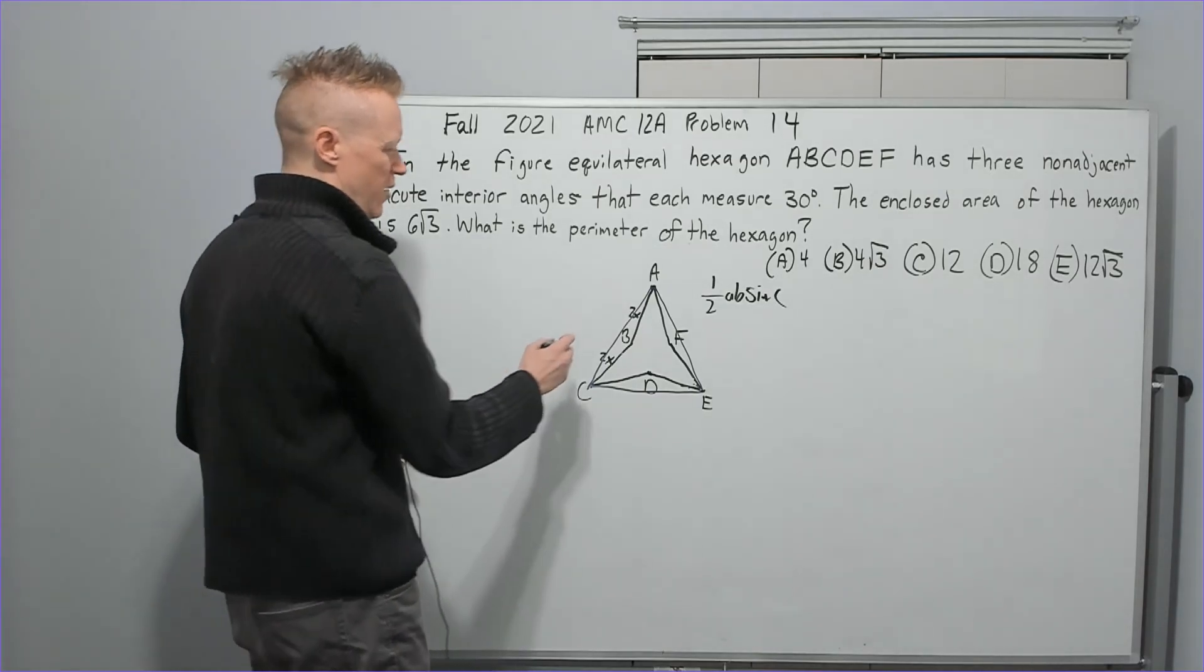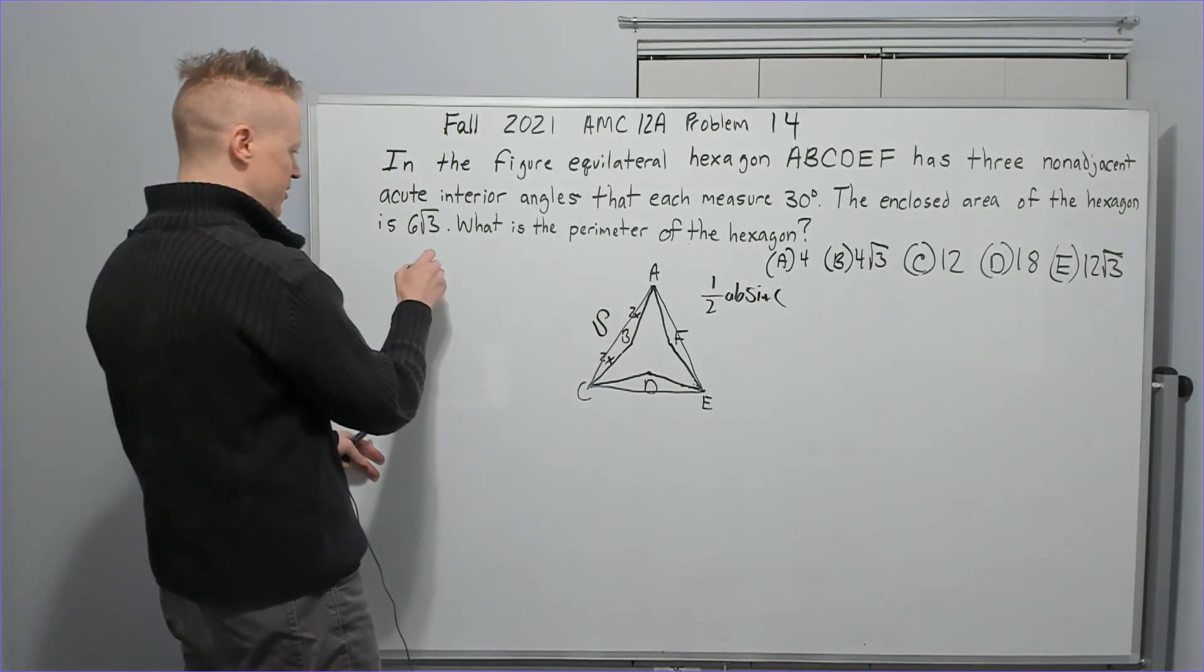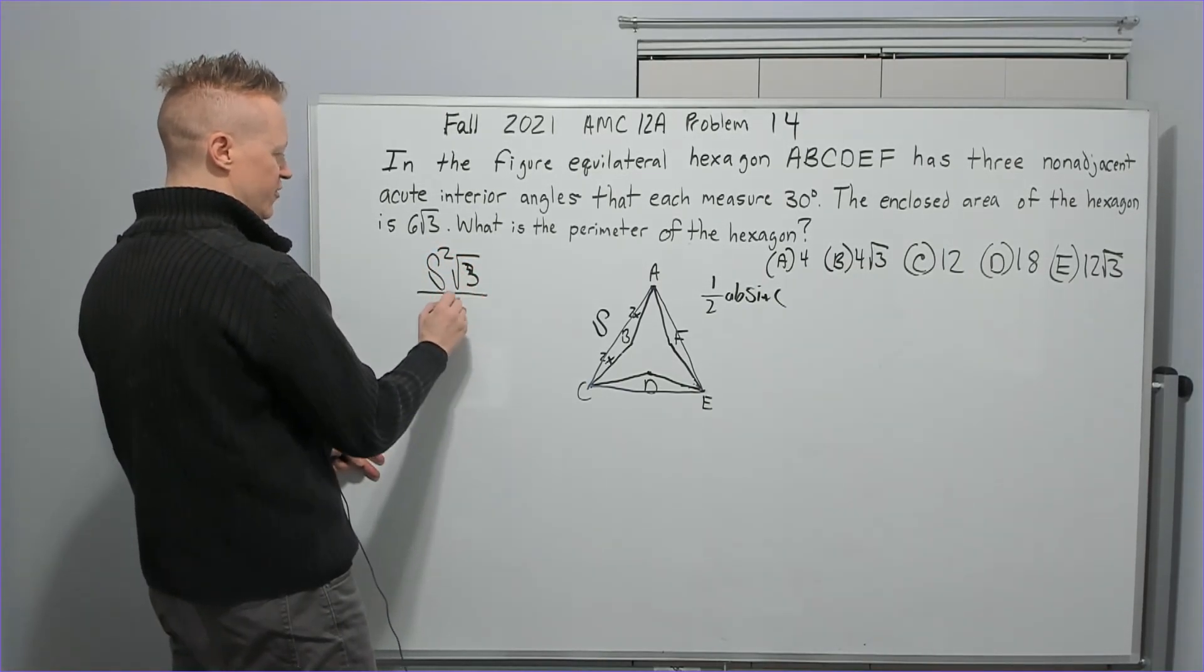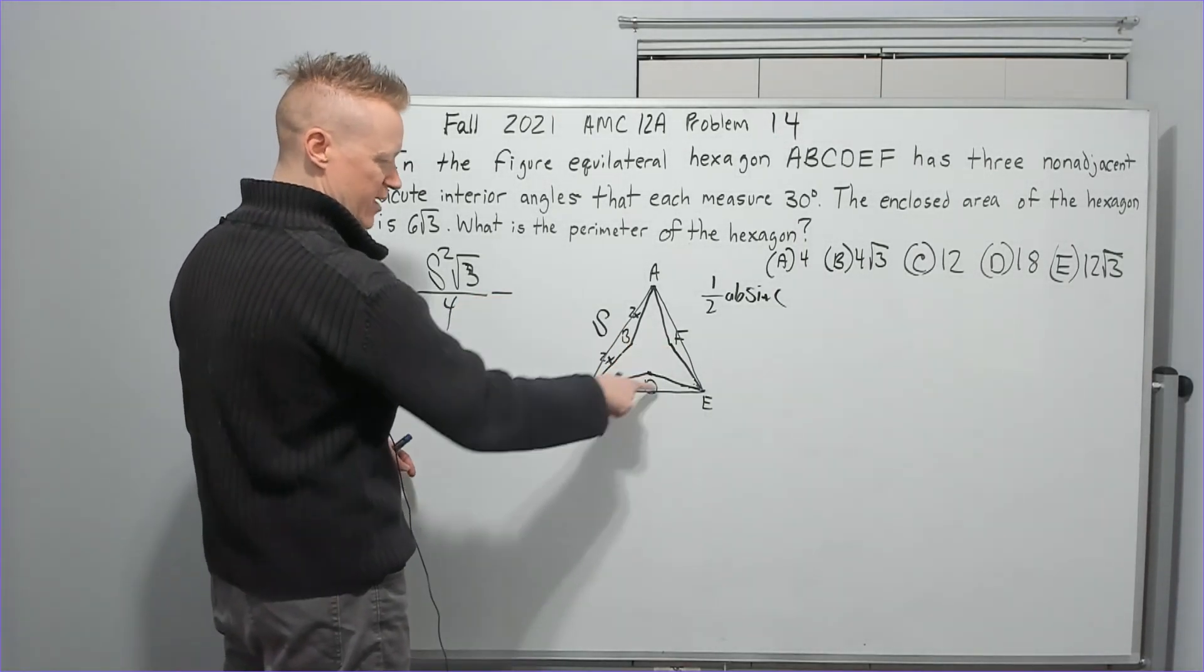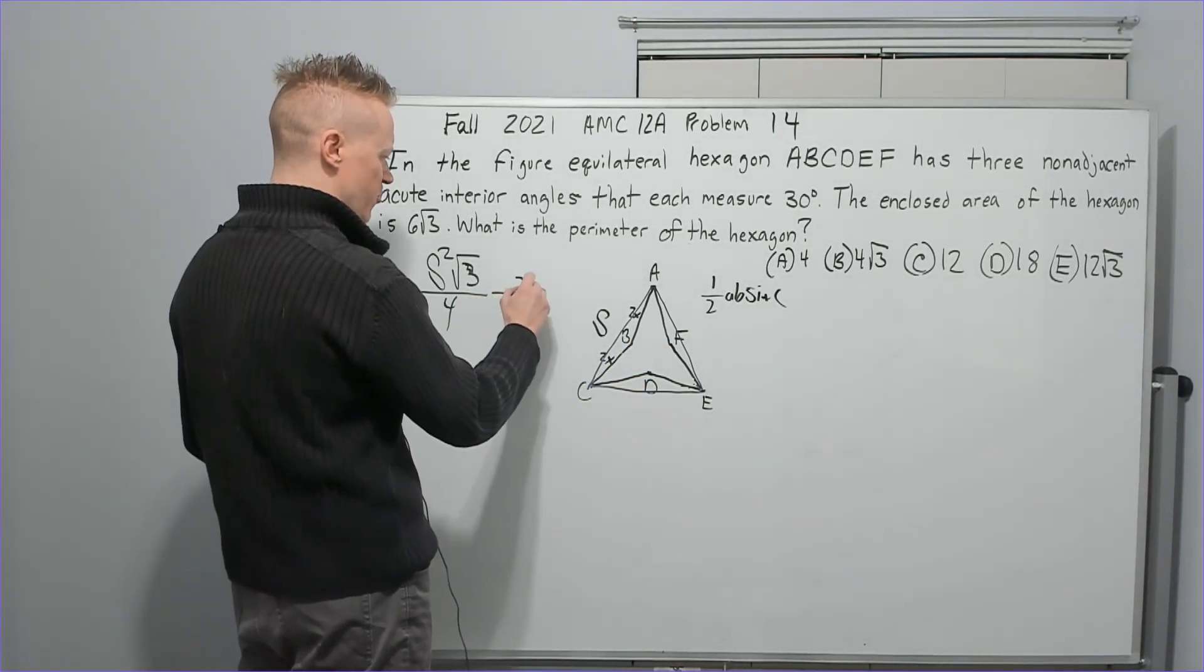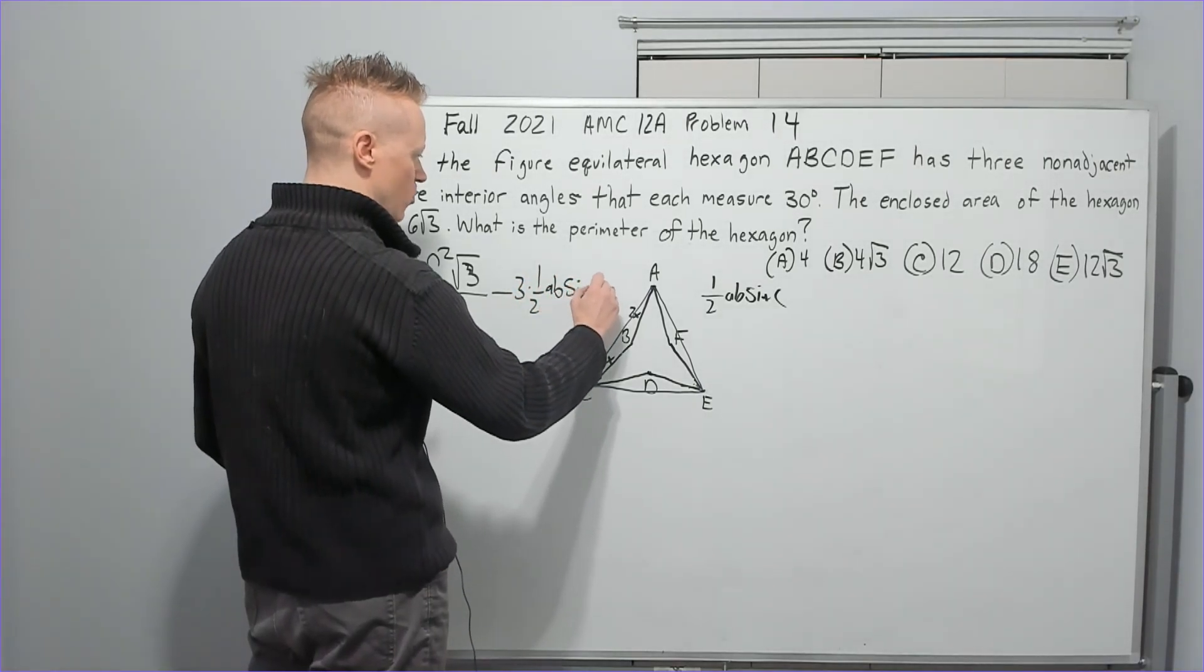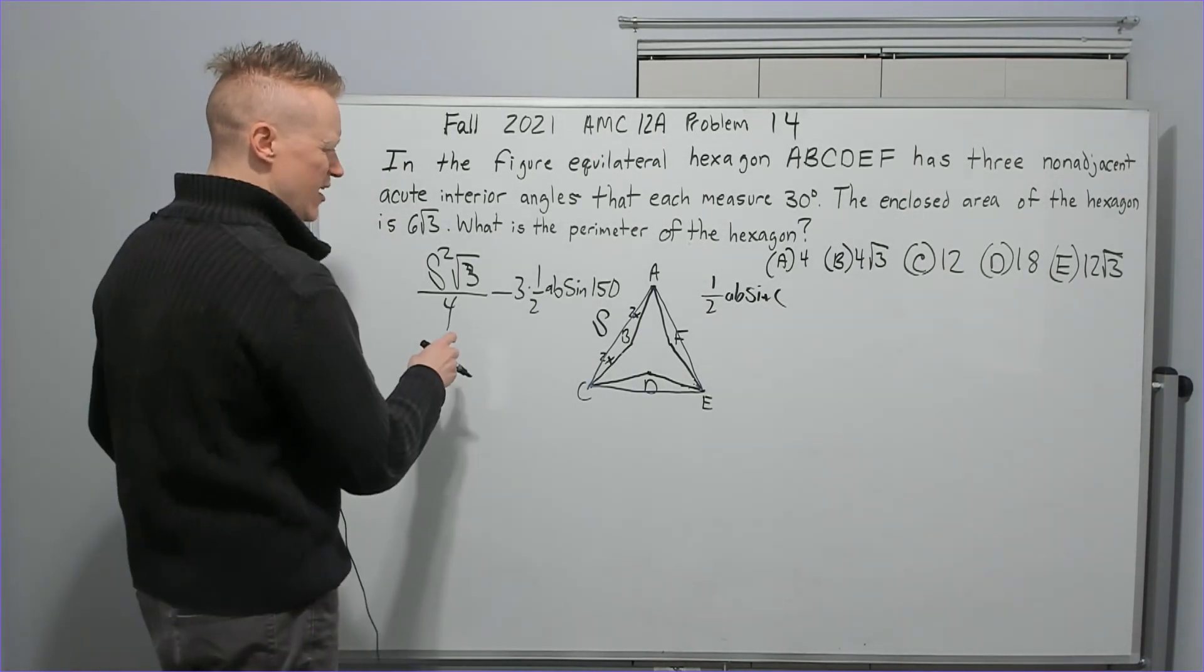So what I thought was, let's find this side out here, S. And I will do S squared root 3 over 4. And then I will subtract the three triangles here, which would be 3 times half AB sine of 150. And I thought that would be easier. So let's see how that would look.